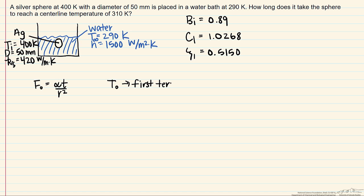In other words, we have the theta star is equal to our C1 exponential of minus, now that's eigenvalue squared times the Fourier number, and that makes it a lot simpler to do the calculation.